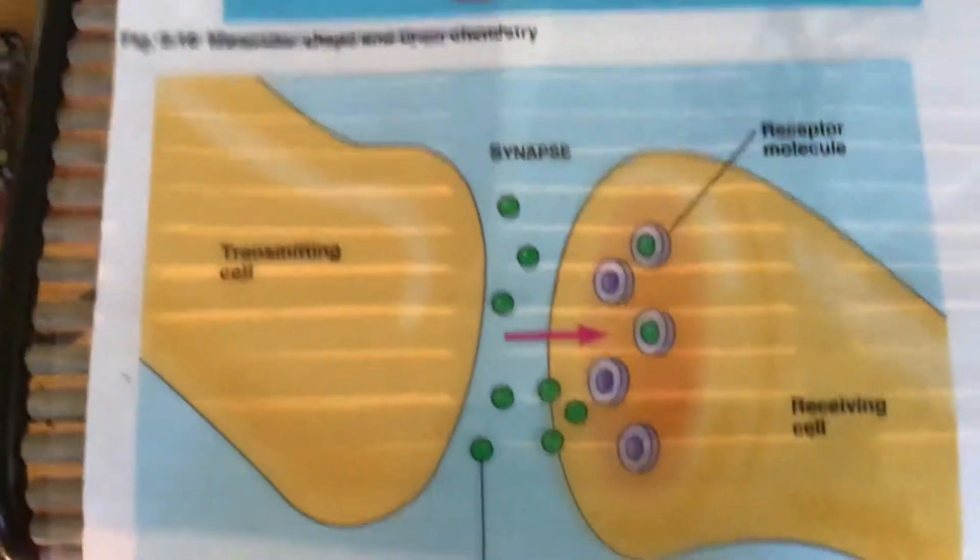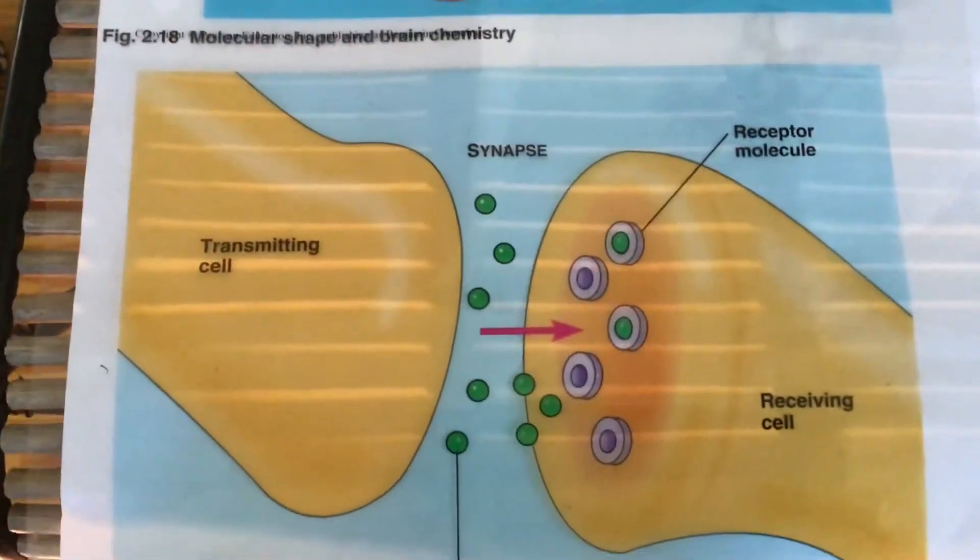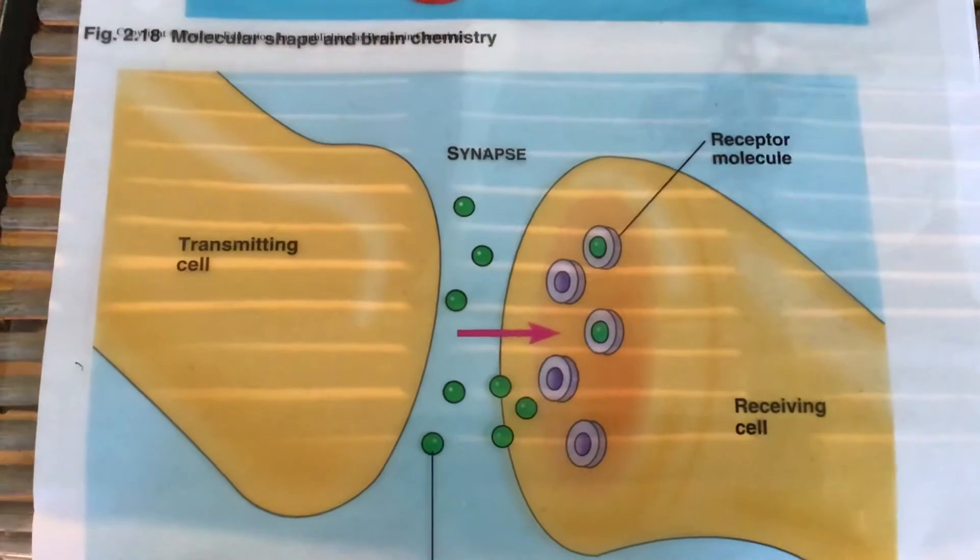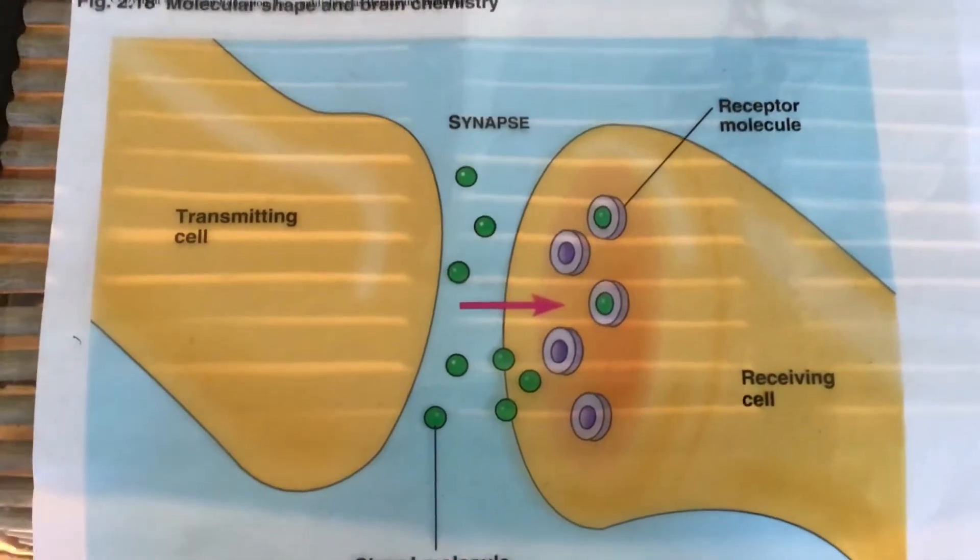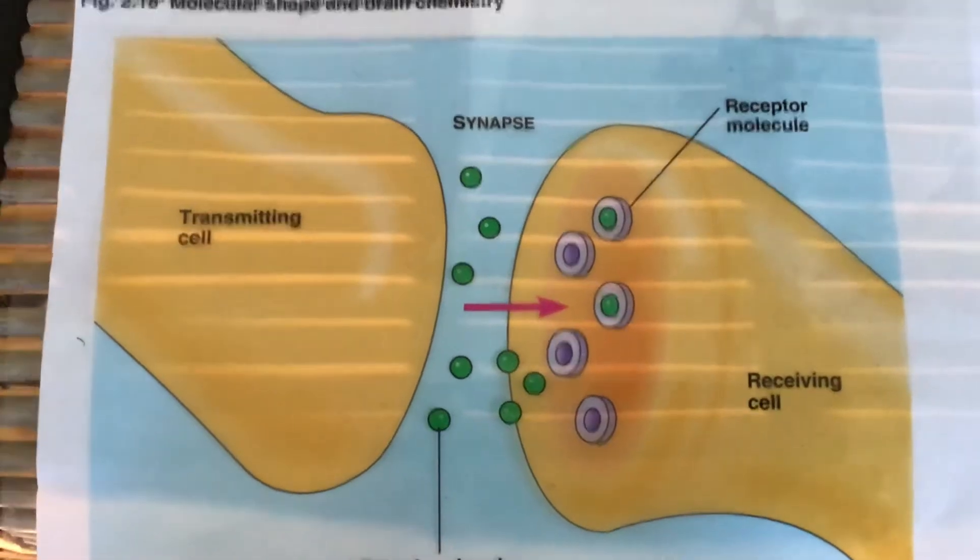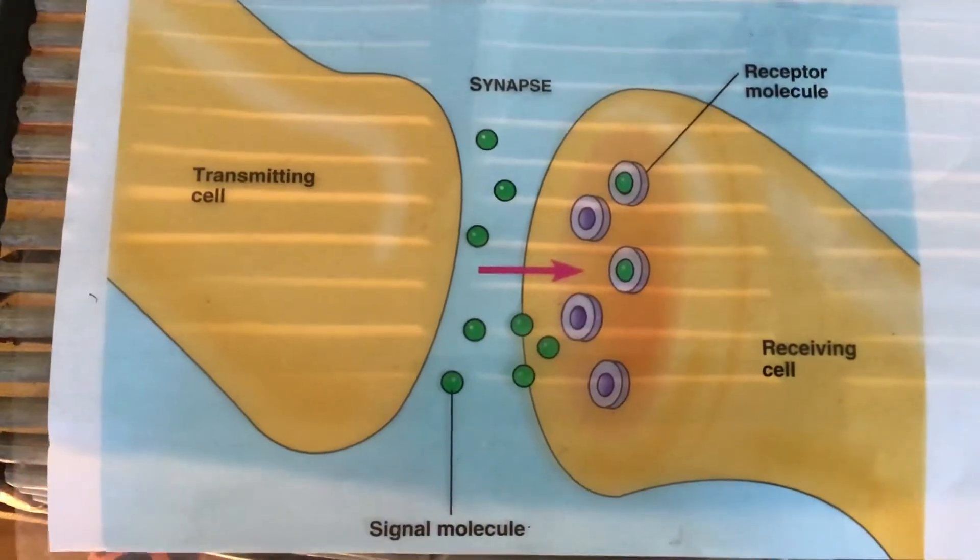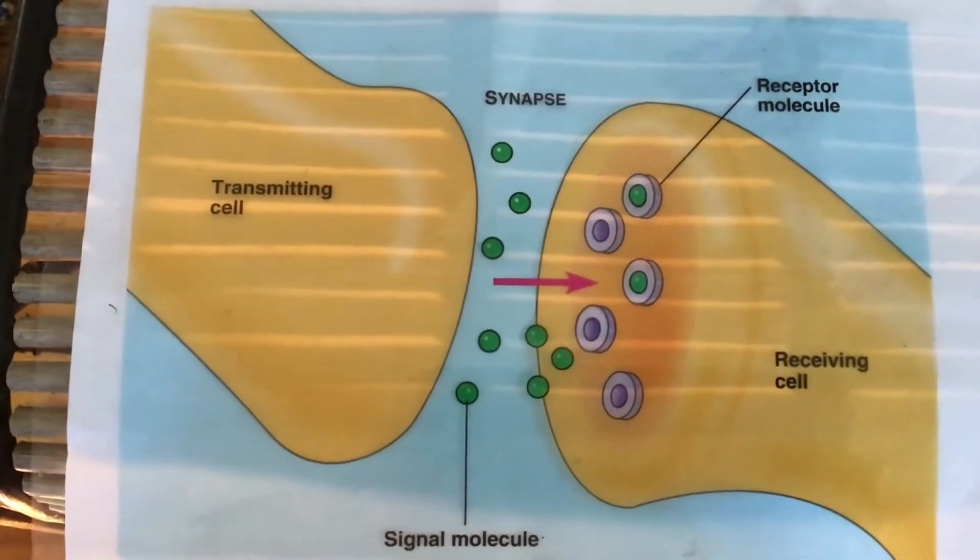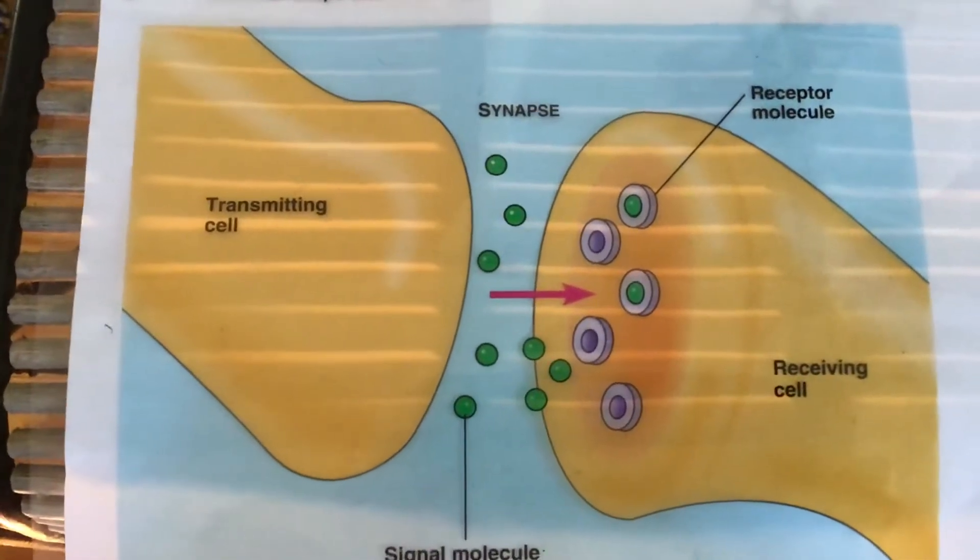For example, in this case, this is a brain chemical. The synapsis in your brain from the transmitting cell to the receiving cell will have receptor molecules that will accept signal molecules of a certain size and shape, and only them.